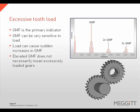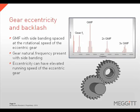Elevated gear mesh frequency does not necessarily mean excessively loaded gears. Gear eccentricity and backlash problems will create elevated levels of gear mesh frequency with sidebands spaced at the rotational speed of the eccentric gear. The gear's natural frequency can be present with sidebanding, and running speed harmonics of the eccentric gear can be elevated.